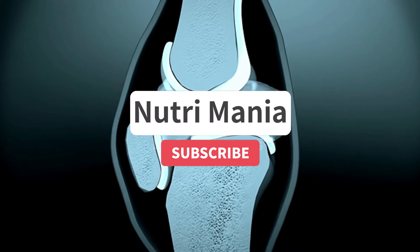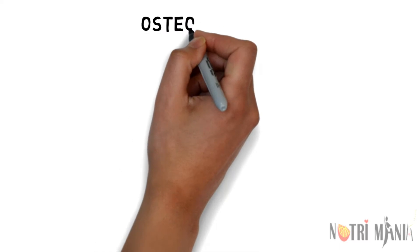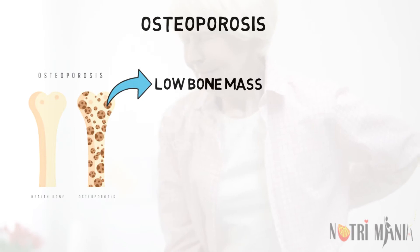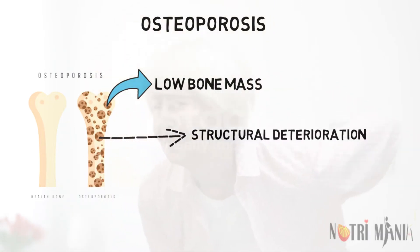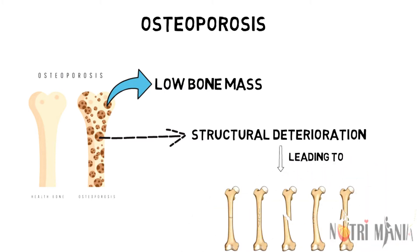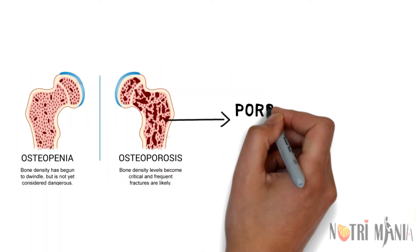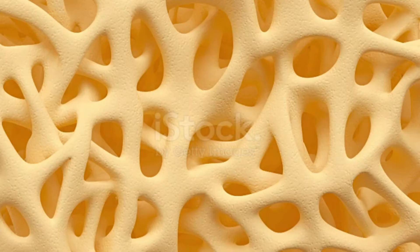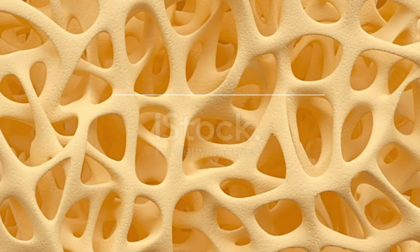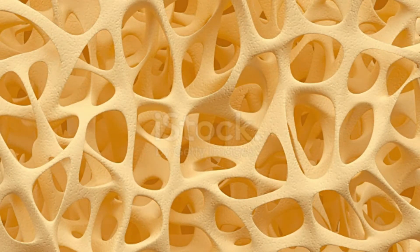So stay tuned and watch the video till the end, and subscribe to our channel if you haven't yet. Osteoporosis, or porous bone, is a disease characterized by low bone mass and structural deterioration of bone tissue, leading to bone fragility and increased risk of fractures of the hip, spine, and wrist. Viewed under a microscope, healthy bone looks like a honeycomb. When osteoporosis occurs, the holes and spaces in the honeycomb are much larger than in healthy bone.